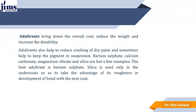Now comes the adulterants. These adulterants overall reduce cost, reduce weight, and increase durability. Adulterants also help to reduce cracking of dry paints and sometimes help to keep the pigment in suspension. Barium sulfate, calcium carbonate, magnesium silicate, and silica are a few examples of fine adulterants. Silica is used only in the undercoat to take advantage of its roughness in developing the bond with the next coat.